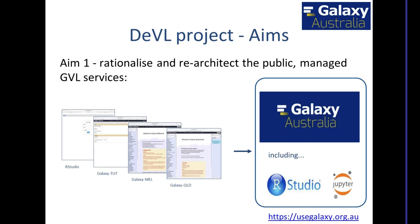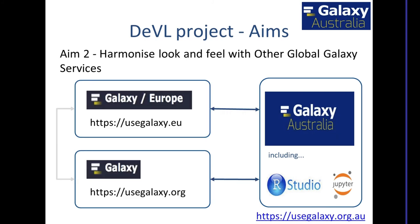The BioDevil project has three major aims that have helped shape Galaxy Australia. The first is the rationalisation and re-architecture of the publicly managed GVL Galaxy services. For this talk, Galaxy Tute for training, Galaxy Melbourne and Galaxy Queensland have been rationalised into Galaxy Australia at usegalaxy.org.au, incorporating all the features of Galaxy Australia as well as Docker environments for RStudio and Python. The second major aim — predominant in Simon's talk — is the harmonisation of Galaxy Australia with Galaxy Main in America and Galaxy Europe, to give all galaxies a similar look and feel and importantly allow us to feed back and help drive development at an international level.